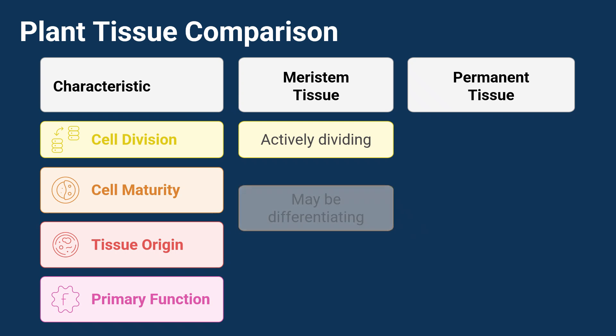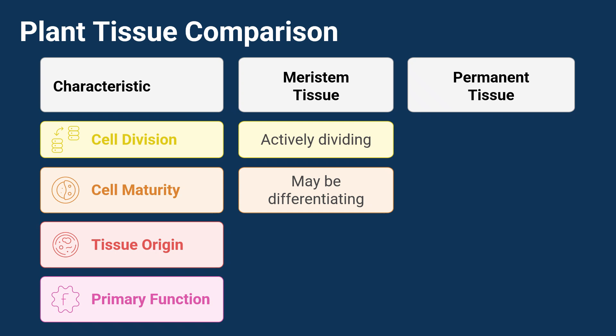Cell maturity. These cells might be differentiating. Think of it this way: they are still figuring out what they want to be when they grow up. They are changing and getting ready to become all sorts of specialized permanent tissues.